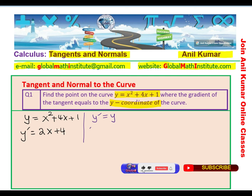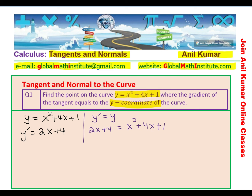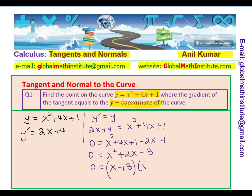So we are saying that y prime should equal y, which gives the equation 2x plus 4 equals x squared plus 4x plus 1. That gives you a quadratic equation to solve. Bringing all terms to one side: 0 equals x squared plus 4x plus 1 minus 2x minus 4, which simplifies to x squared plus 2x minus 3. This can be factored — product is minus 3, sum is plus 2 — giving (x plus 3)(x minus 1) equals 0. This yields two solutions: x equals minus 3, and x equals 1.